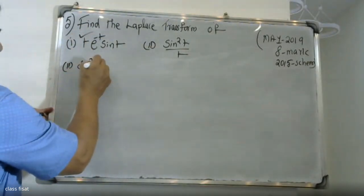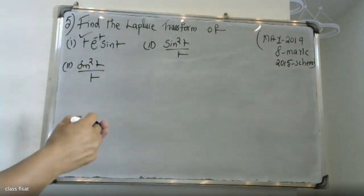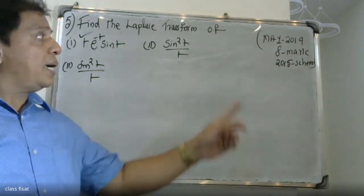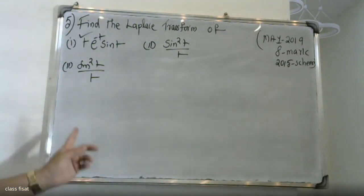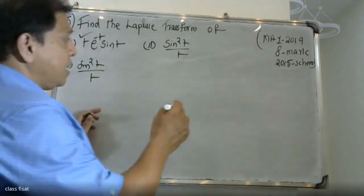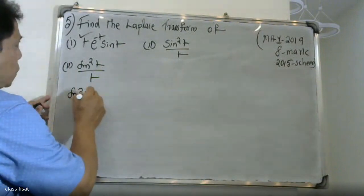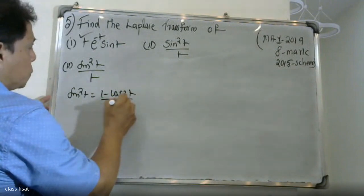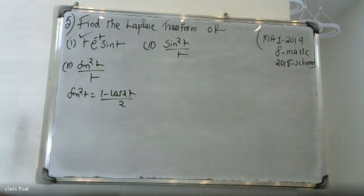sin²t. Science care 3 by thing. If we have 2 questions, we will have to ask questions. Let's have a question. Science care 3 by thing. sin²t is equal to 1 minus cos 2t by 2. We have to learn about it again. sin²t is equal to 1 minus cos 2t by 2.